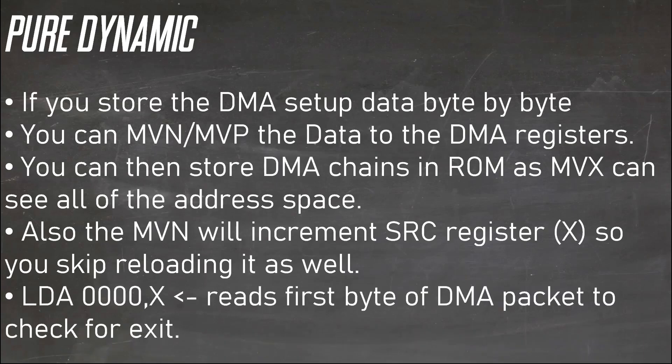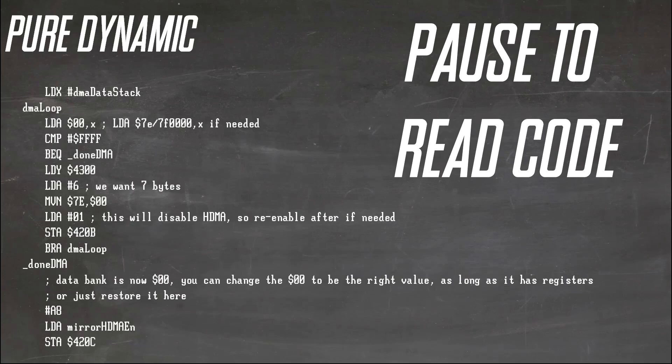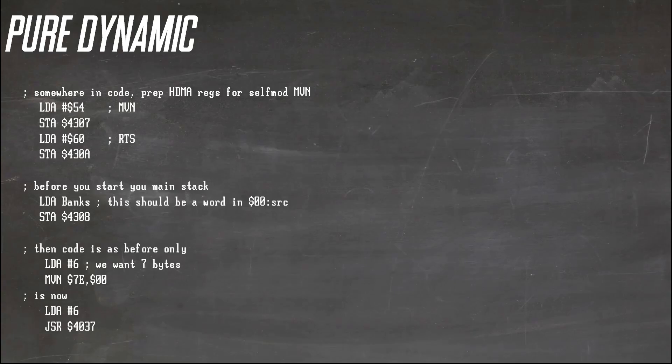You can just LDA to check if the chain has ended. For loading pre-chains out of ROM, you need to be able to modify the source bank for the move — there is a small trick. You can put MVN or MVP into the upper bytes of a DMA slot. Since you are doing DMA, not HDMA, registers 7, 8, 9, A and B are free for you to use as self-modifying code. This way the modification happens in fast clocks and you can set both with a word write.